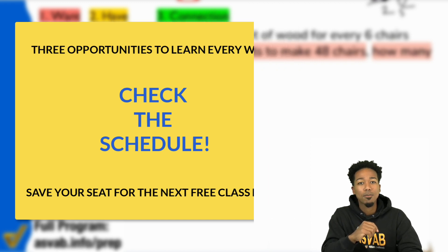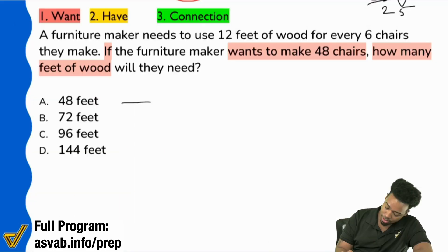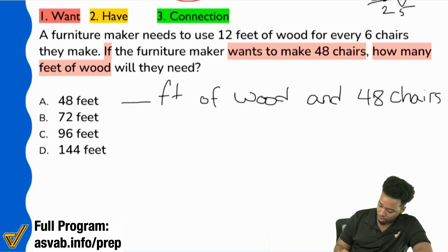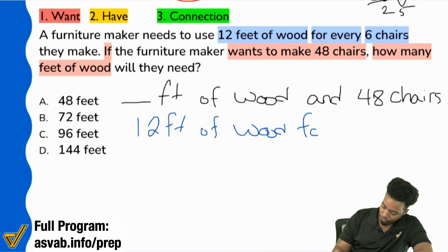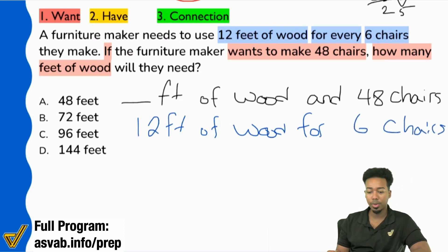Let's get back to the action. So we'll say blank feet of wood and that makes 48 chairs. If we look at the other information given in the problem, it says the furniture maker needs to use 12 feet of wood for every six chairs. So right there, 12 feet of wood for every six chairs.